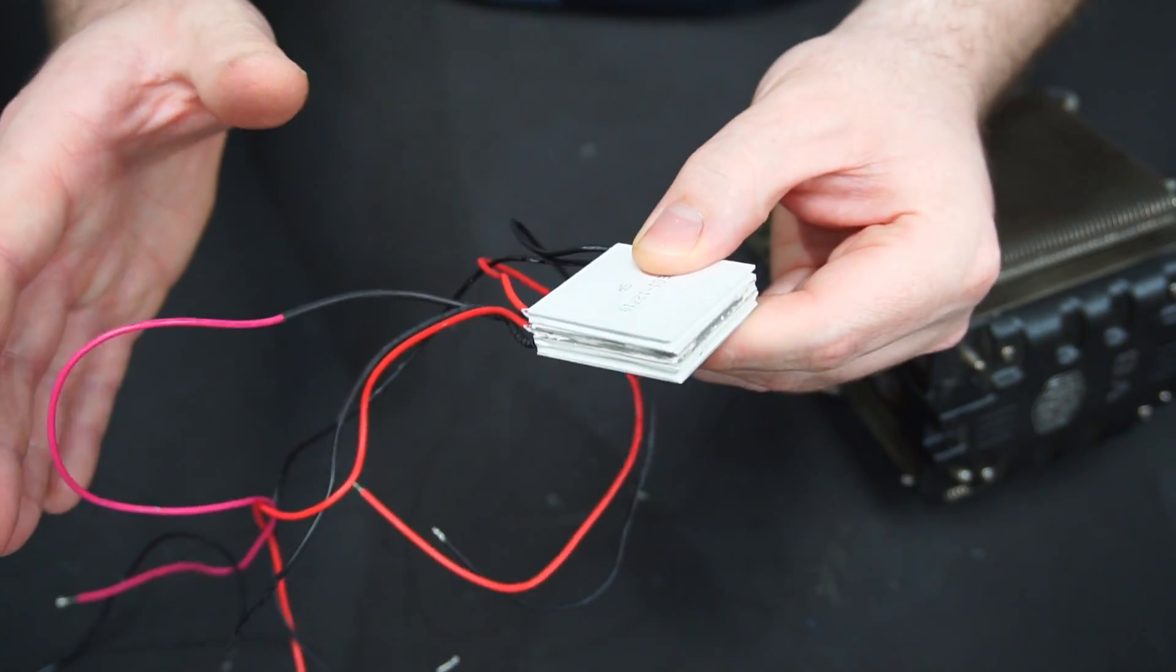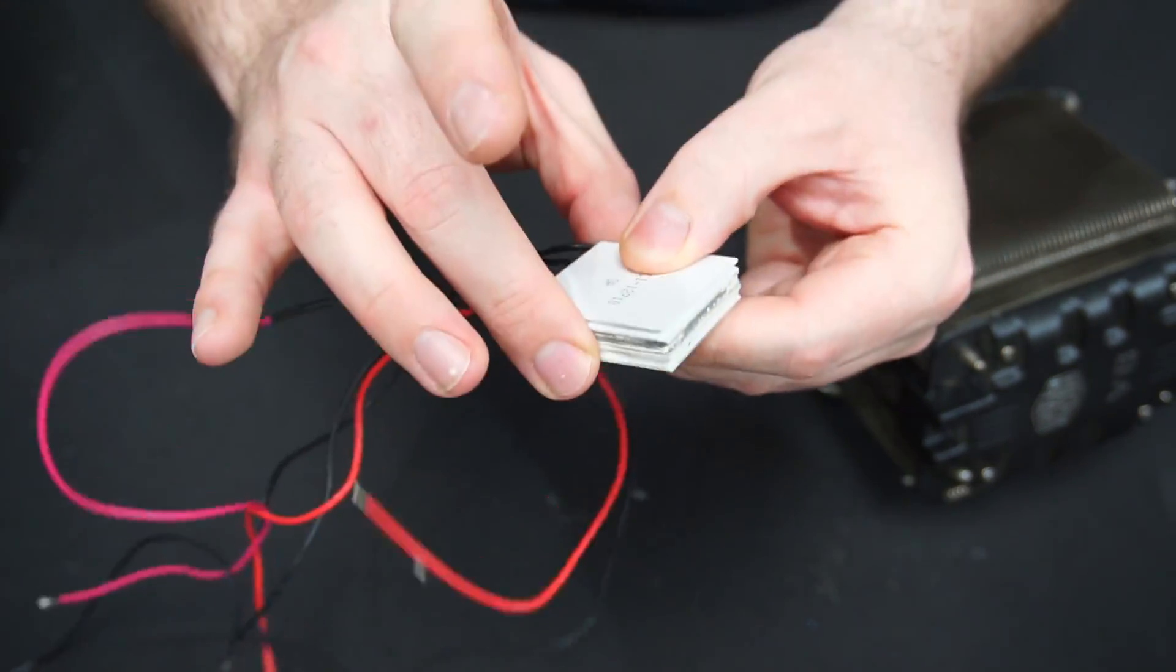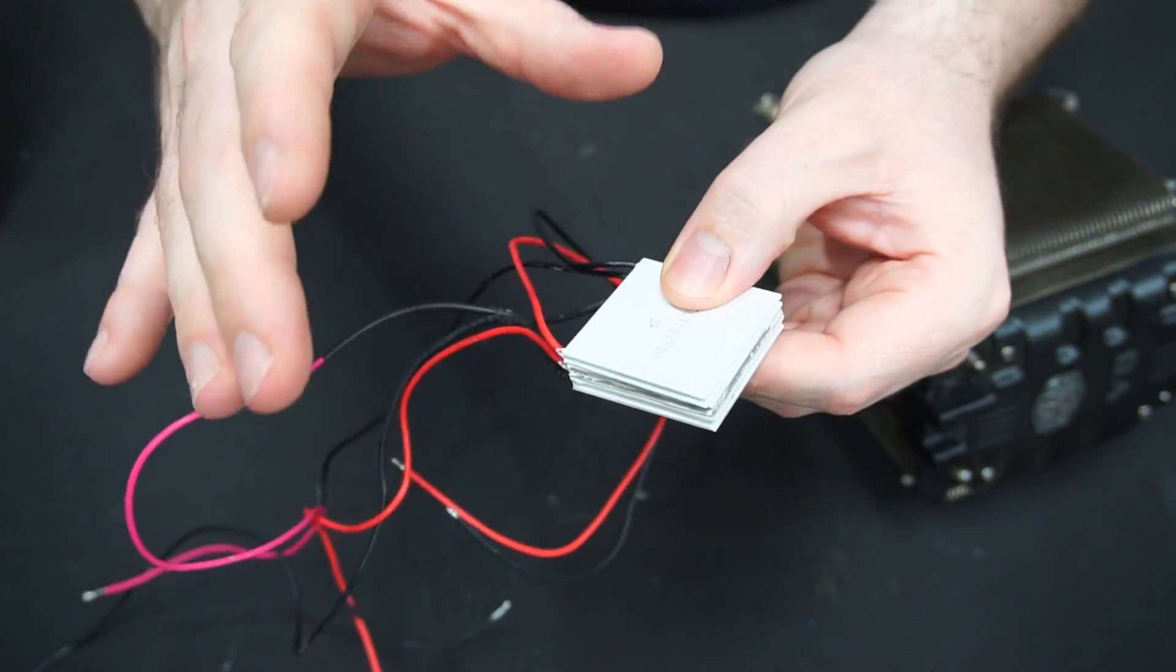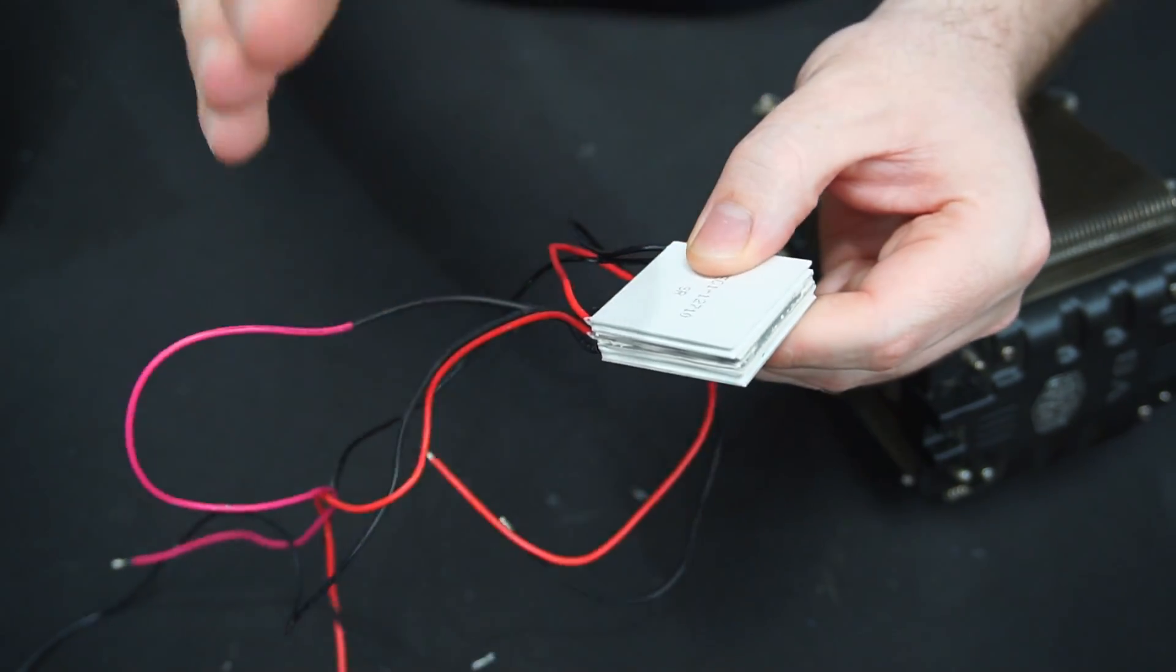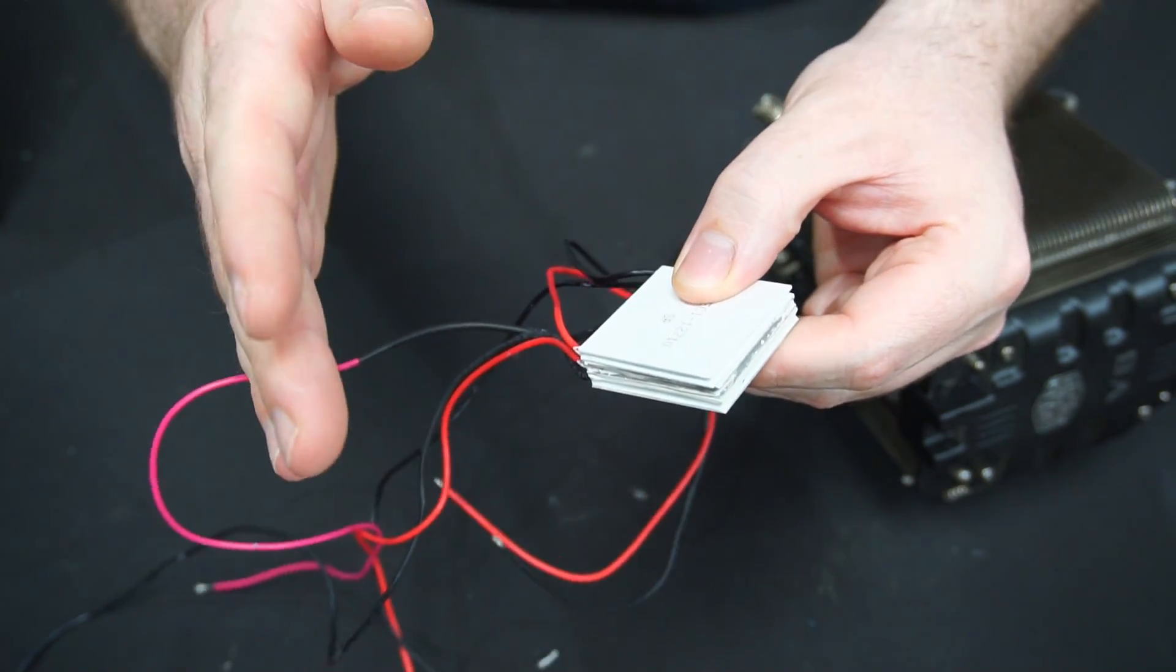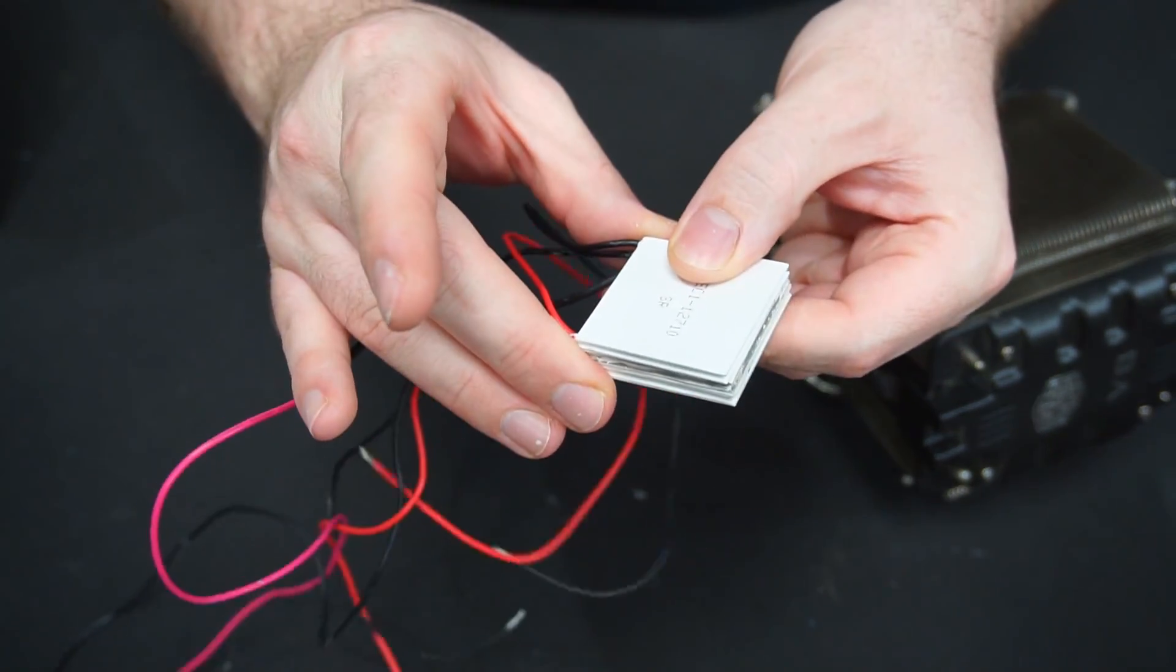The first version of my cloud chamber I built I only used one stack of Peltiers and it failed to get me down to the temperatures I required so that's why I'm using two coolers and two stacks of Peltiers in this build.